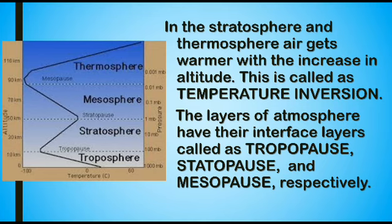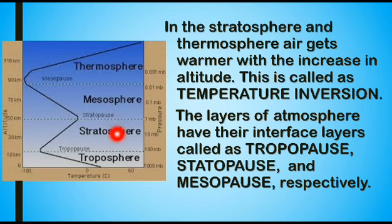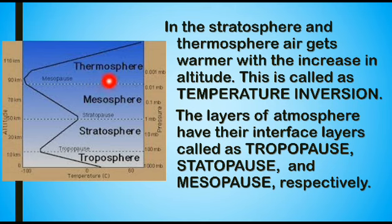In the stratosphere and thermosphere, air gets warmer with the increase in altitude. This is known as temperature inversion. It is against the principle applied in troposphere, where temperature decreases with increasing altitude. The layers of atmosphere have their interface layers which are known as tropopause. Tropopause is present between the troposphere and stratosphere. Similarly, stratopause is present at the top of the stratosphere, between the stratosphere and mesosphere. The mesopause is present at the top of the mesosphere, in the transition place between mesosphere and thermosphere.